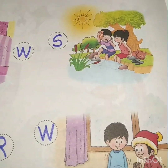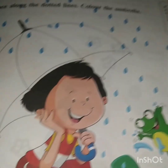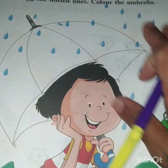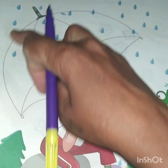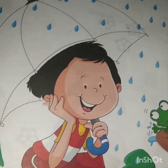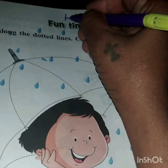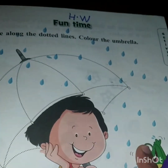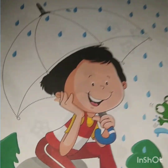Excellent, children. Now on the next page — that is page number 123 — you can see a picture. There are dotted lines, so you trace the dotted lines and complete the umbrella. Then you color the umbrella and send it to me. Can you tell me which season this is? Yes, it is the rainy season.